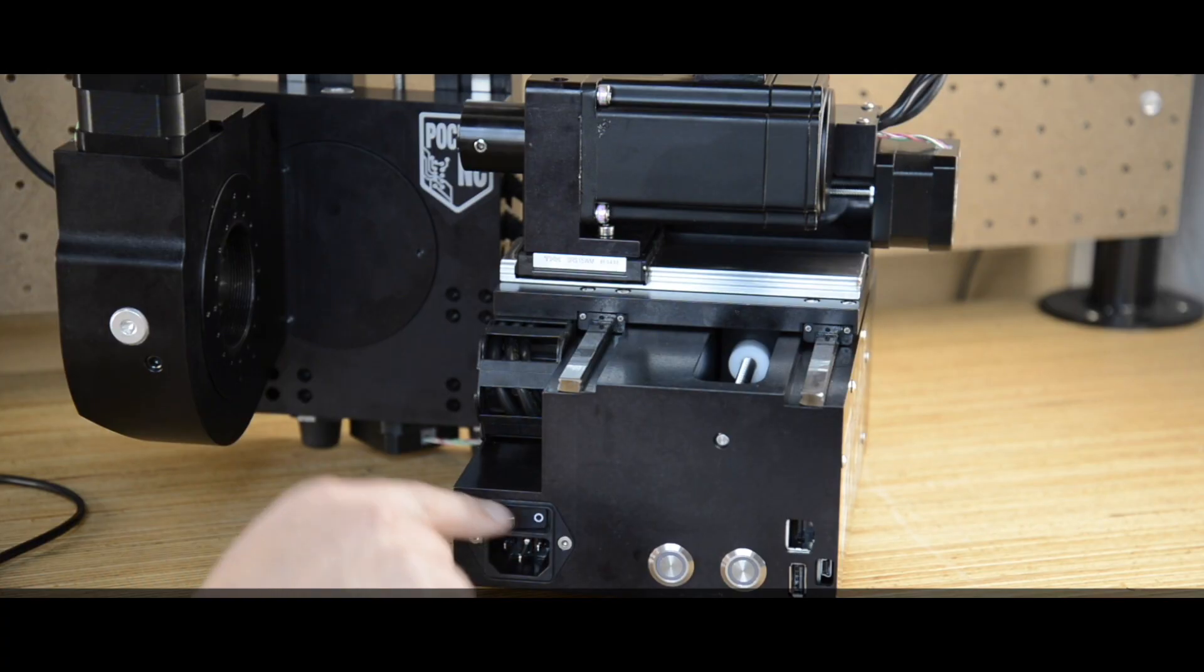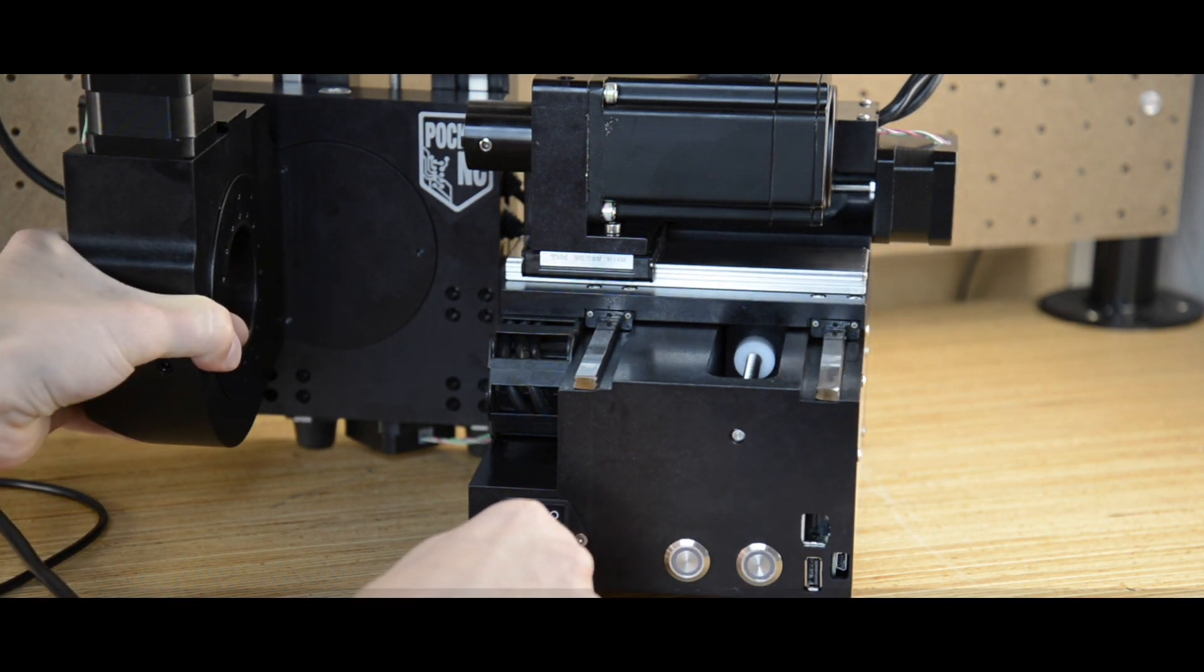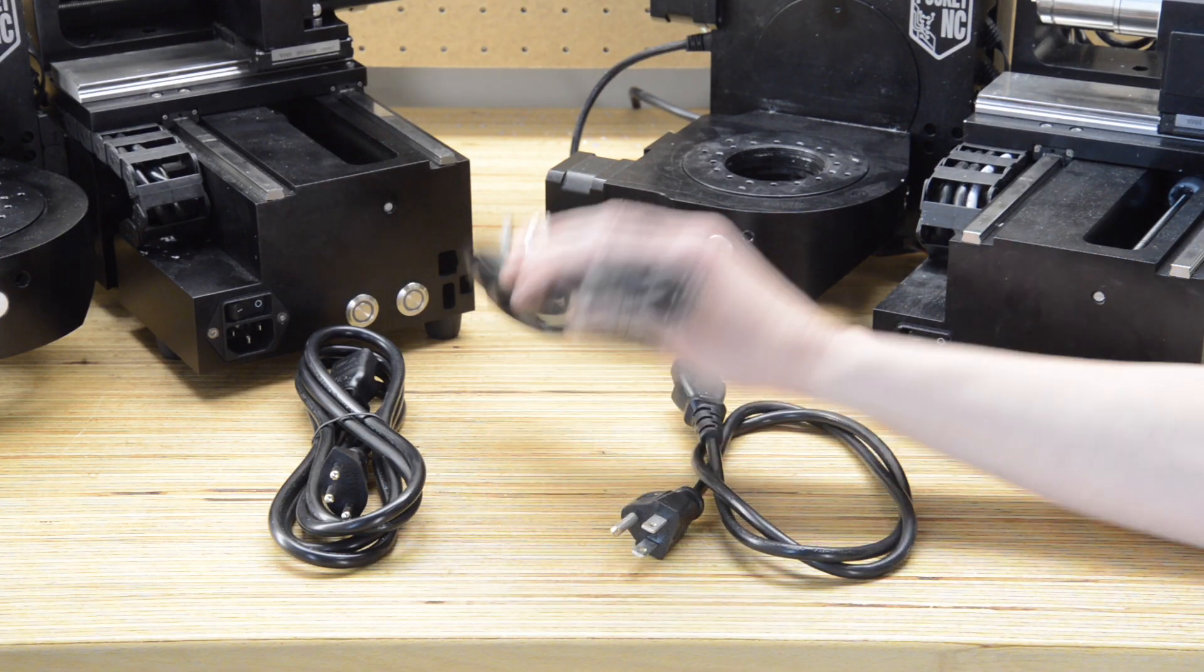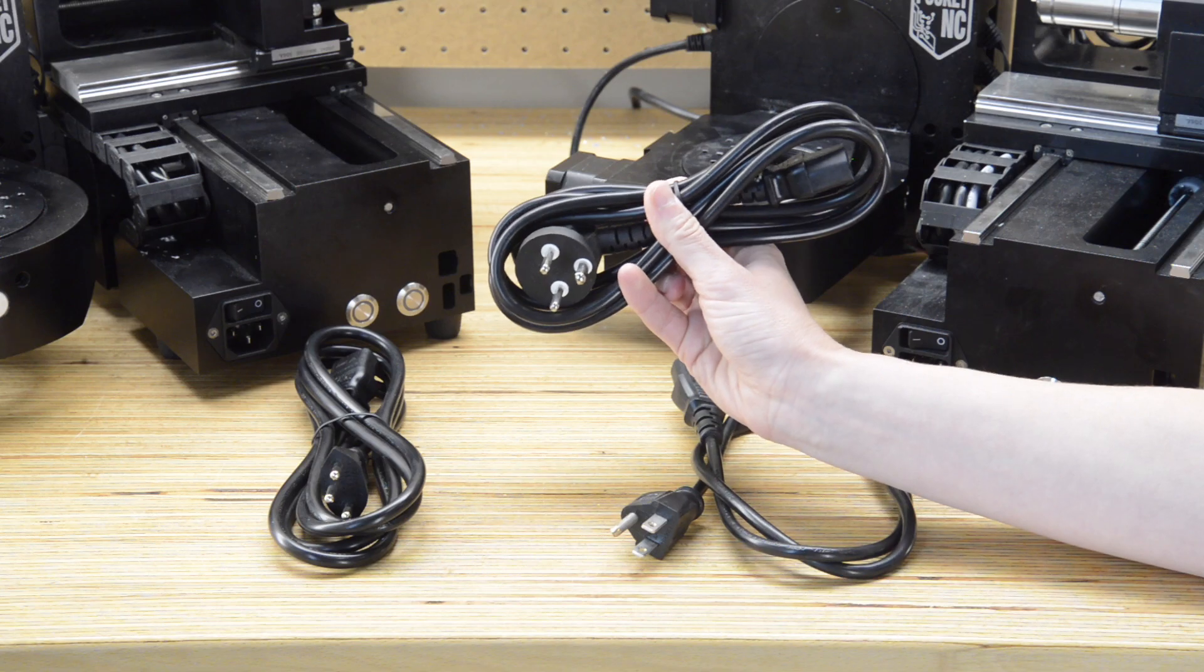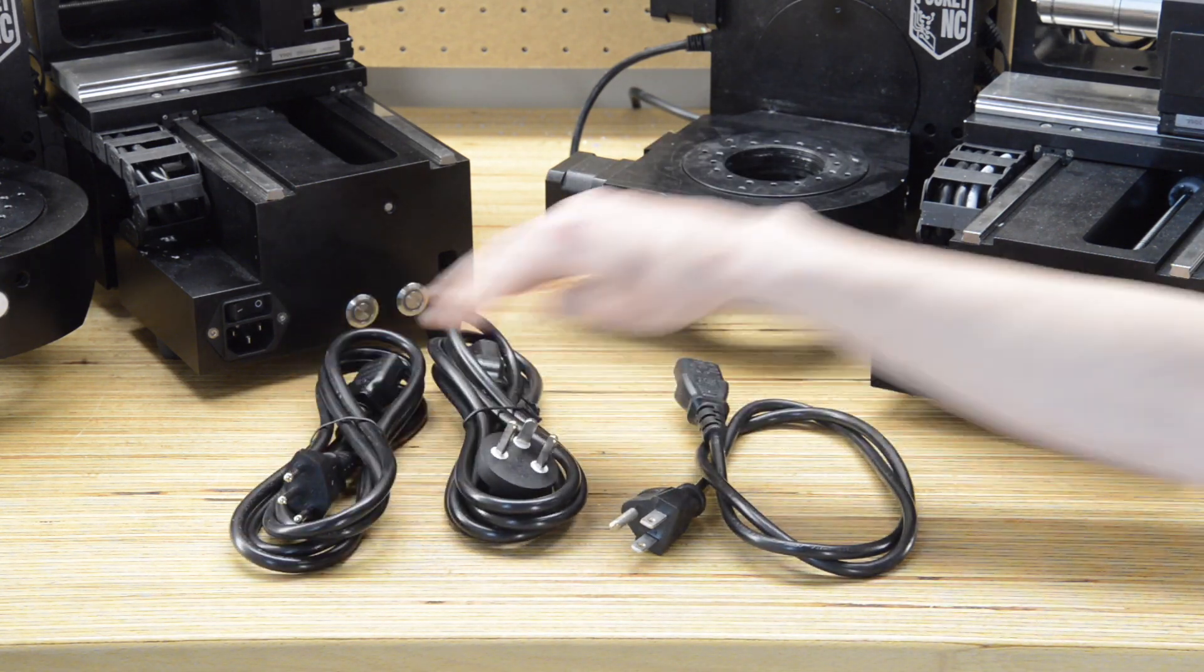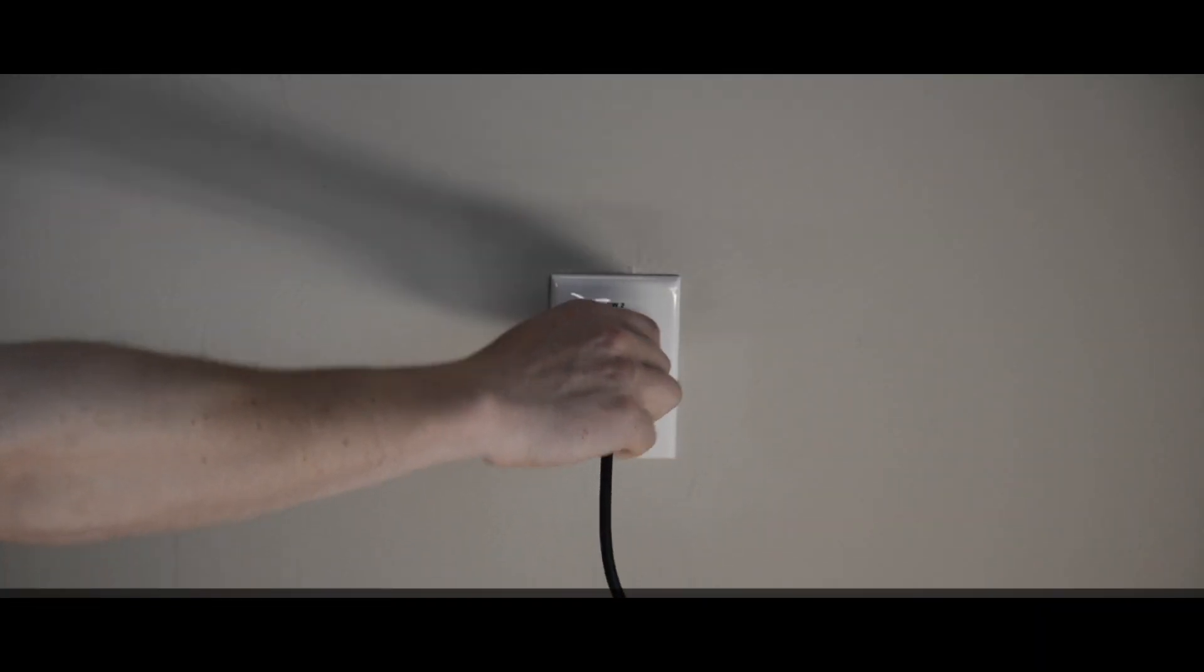The Pocket NC has a universal power supply which runs on 90 to 264 volts AC. We will send you a power cord for the country you are in. In most cases, you can plug the machine into the wall. It runs on single phase power.